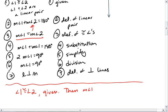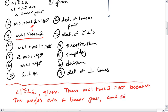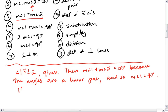Then measure of angle 1 plus measure of angle 2 equals 180 degrees, because the angles are a linear pair. And so measure of angle 1 equals 90 degrees. If measure of angle 1 equals 90 degrees, then it must be that L is perpendicular to M.